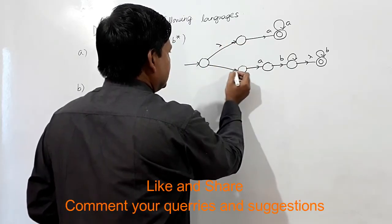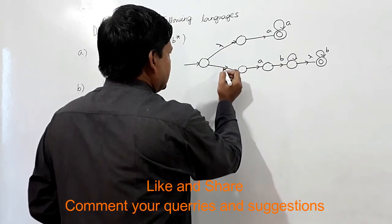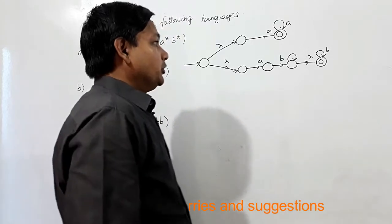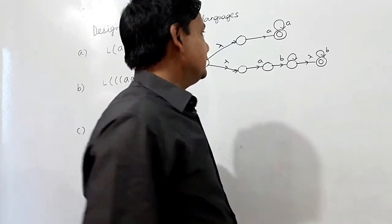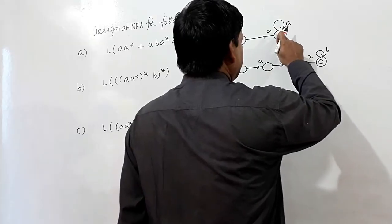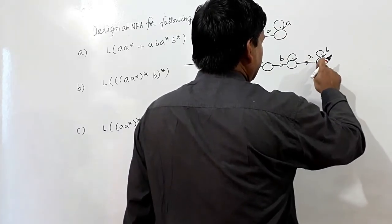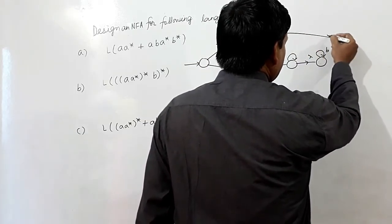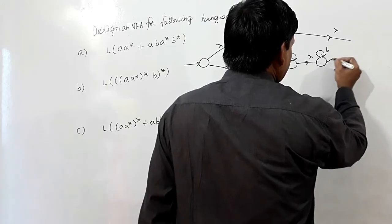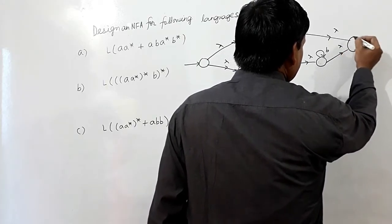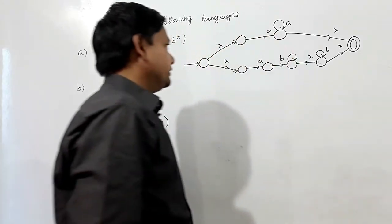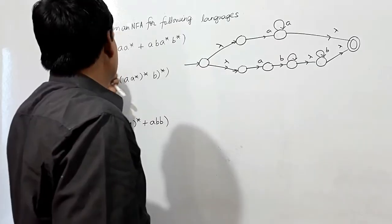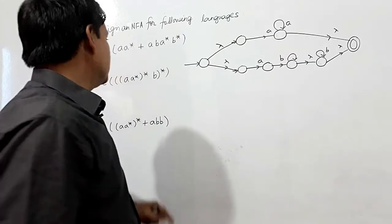This is lambda and this is lambda. Now we have to make a single final state. To make a single final state, we make lambda transitions from the final states to create a new final state. This is the NFA for this regular expression — the NFA for the first part is now complete.